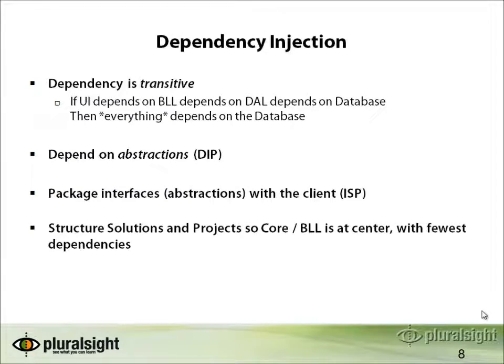The result is tight coupling between the business layer and by extension the data access layer, XML files, and infrastructure components. There's no way to change these implementation details without a recompile, resulting in an open-closed principle violation and making this very difficult to test in isolation. Dependency is transitive — if the UI depends on the business logic layer, which depends on the data access layer, which depends on the database, then everything depends on the database. We want to instead depend on abstractions where we know changes are likely.